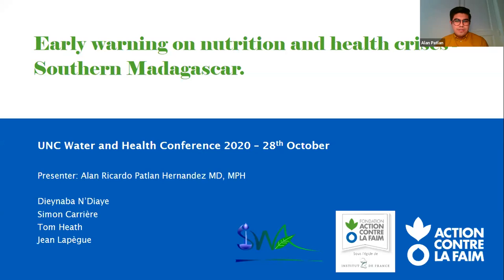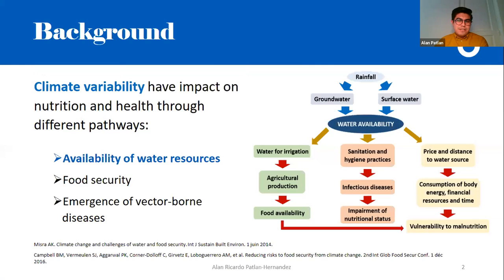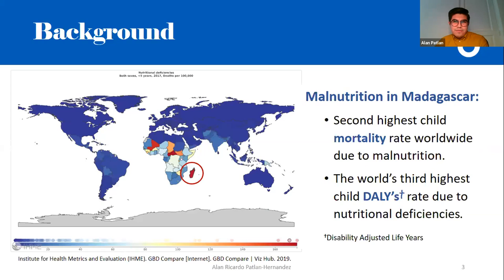Action Against Hunger is concerned about the impacts of climate variability on population health, especially the most vulnerable. As we know, climate variability impacts nutrition and health through different pathways, including availability of water resources, food security, and the frequency and distribution of vector-borne diseases. Focusing on Madagascar, this country has the second highest child mortality rate worldwide due to malnutrition, as well as the third highest rate related to nutritional deficiencies, making undernutrition one of the main public health priorities.